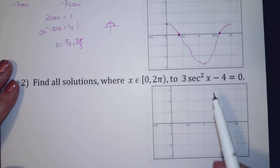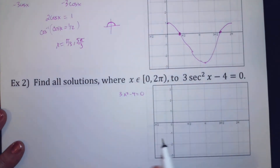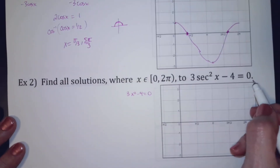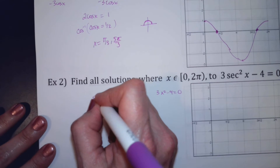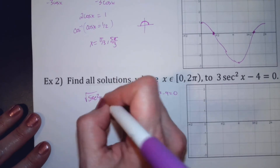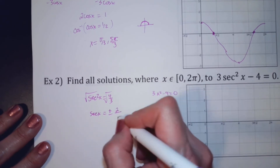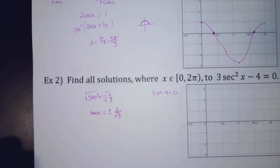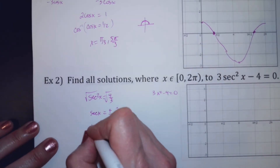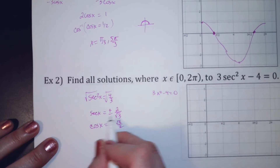Same question down here, example 2. We want 3 secant squared x minus 4 equals 0. Imagine you had 3x squared minus 4 equals 0 — you'd add 4, divide by 3, and take the square root. So moving the 4 over and dividing by 3, I get secant squared equals 4/3. Taking the square root of both sides, secant equals plus or minus 2 over radical 3. Secant is the reciprocal of cosine, so cosine equals plus or minus radical 3 over 2. I have cosine memorized; I don't have secant memorized.